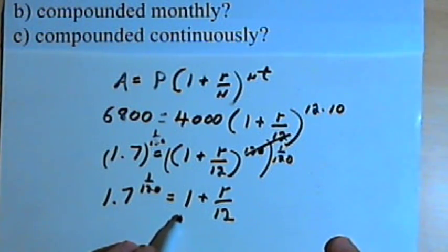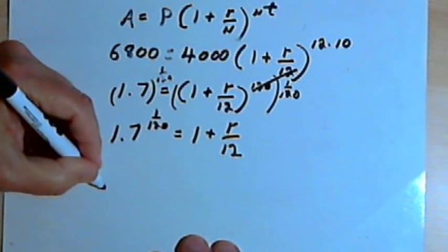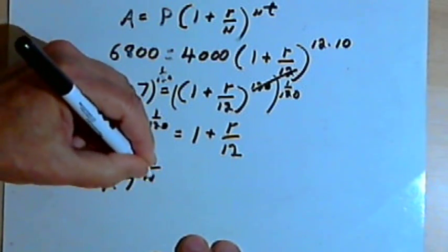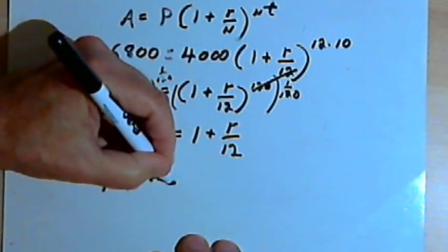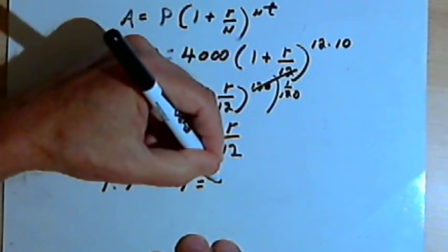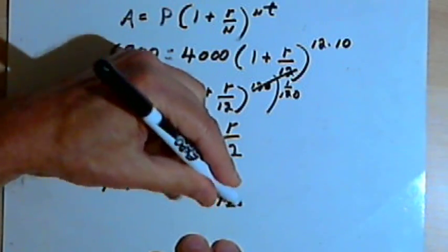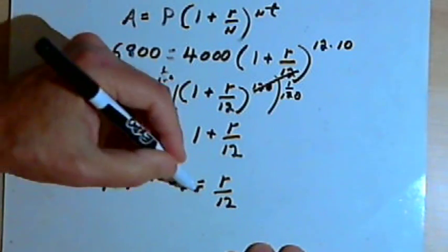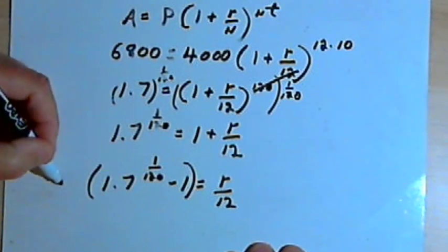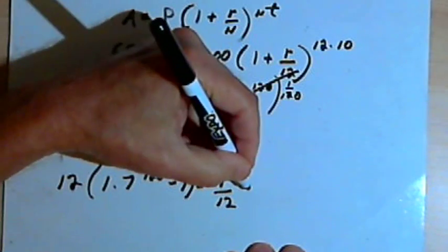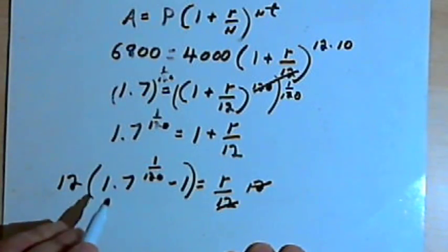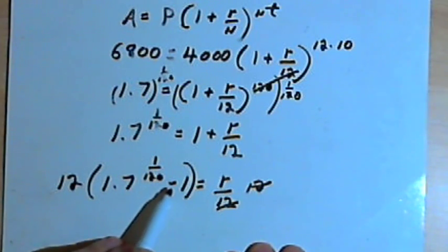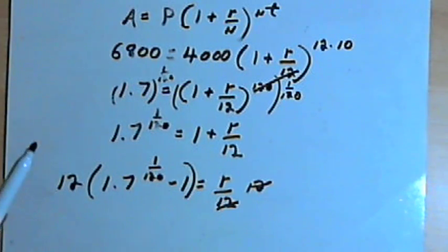I'll subtract a 1 from both sides of the equation. I have 1.7 to the 1 over 120 minus 1 equals r over 12. And to get rid of that 12, I'll just multiply both sides of the equation by 12. So I have 12 times 1.7 raised to the 1 over 120 minus 1 equals r.